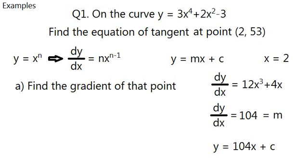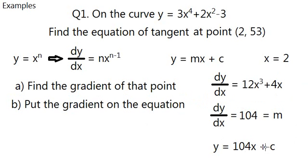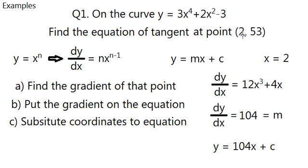So what do we do now? We've put the gradient onto the equation itself. Now we're just gonna substitute coordinates onto the equation. We know that y equals 53, x equals 2, so we just put them together. Then we'll find that 104 times 2 plus c equals 53. Let me clean up the screen a bit to spare off some space.